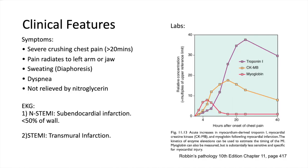For lab studies, troponin I is the gold standard for myocardial infarction. Levels rise 2-4 hours after infarction, peak at 24 hours, and return to normal at 7-10 days. CKMB, creatinine kinase, is useful for detecting re-infarctions occurring days after the initial attack. Its levels rise 4-6 hours after infarction, peak at 24 hours, and return to normal by 72 hours. Myoglobin is less specific and sensitive, as it may be elevated in musculoskeletal disease, but may still have usefulness in detection of re-infarctions.